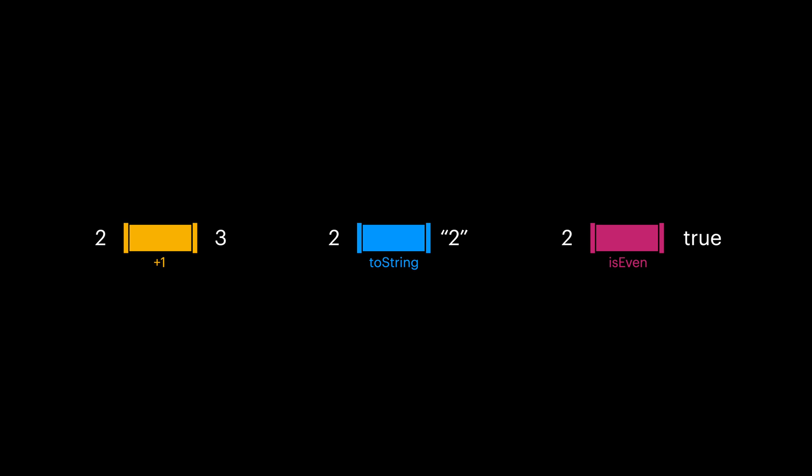And for the last example, it maps all even integers to true and the rest to false. As we said, the inputs and outputs are actually sets of values. For the yellow pipe, input and output are both sets of integer values.